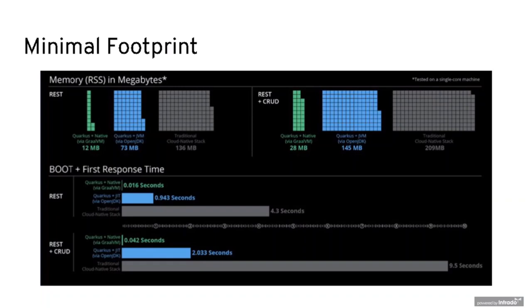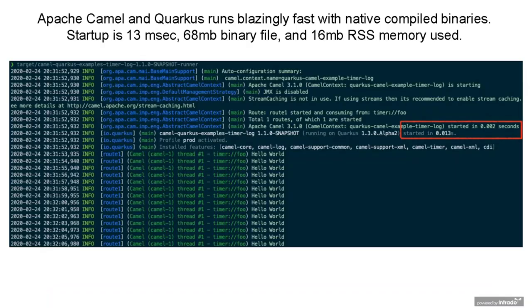We have demos with Camel and Quarkus. One slide shows that if you native-compile Camel with Quarkus, you can get it to start up really fast — in certain milliseconds. The binary size of the native compile is 68 megabytes in this example, and the memory use is only 16 megabytes resident set — that's the total memory including heap and everything. Let's go and see the demos.